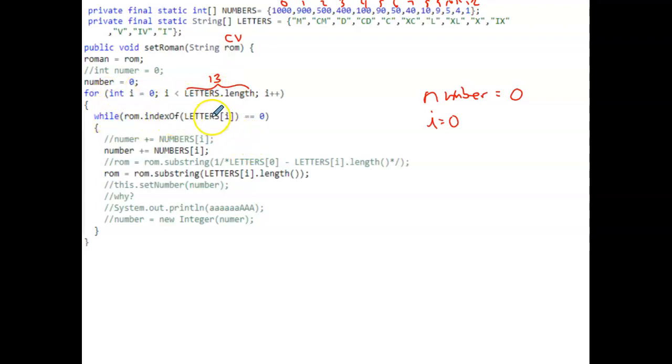And then as we traverse through the array, and letters.length has 13 elements, we're going to start with the index of letters element i. And i right now is 0, so letters array element 0 is M. And when we look at our string CV, there is no letter M in there, so there is no index for the letter M, so that's not equal to 0, so it doesn't execute the while loop. Instead it comes back and increments i to 1. Then we go through and element of the letters array with an index of 1 is CM. And CM is not in our string, so we loop again and increment to 2, that's D. Then we increment to 3, that's CD.